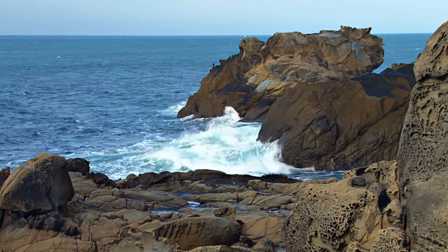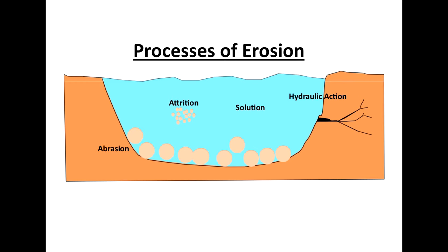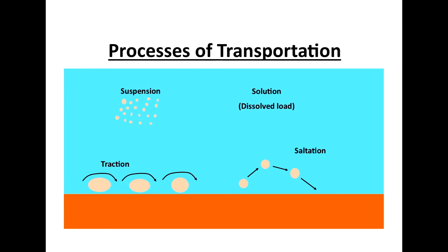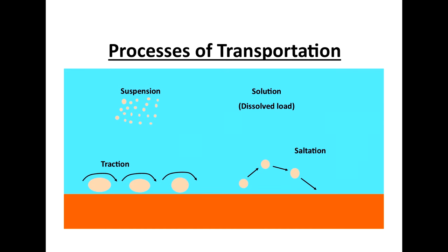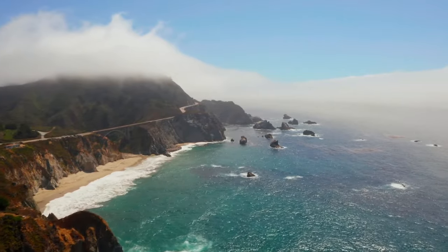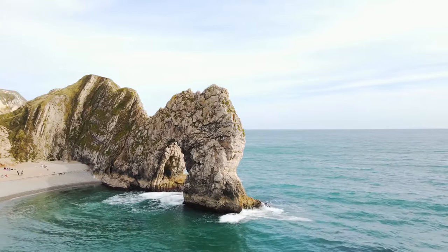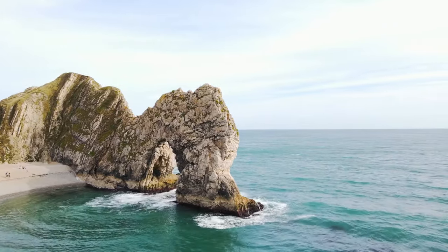Erosion is the breaking down of rock at the base of the cliffs. Transportation is where all that broken down rock, sediment and sand is transported through the sea and waves, and is then finally deposited somewhere — whether it be a bay, a beach, or forming spits and bars. There are four main types of erosion: hydraulic action, abrasion, attrition and solution. For transportation we have traction, saltation, suspension and solution, and one key term relating to transportation is longshore drift. Deposition is where material is dropped in a sheltered area.